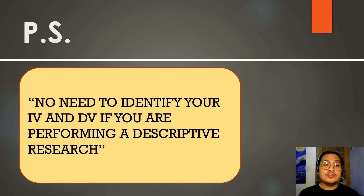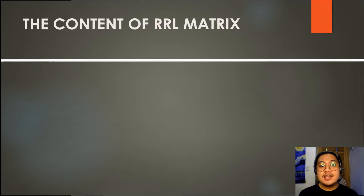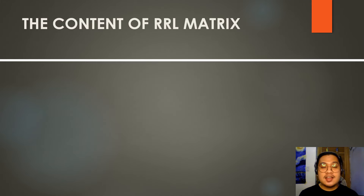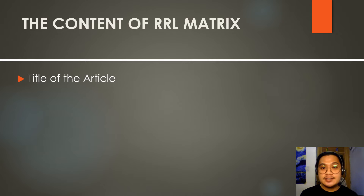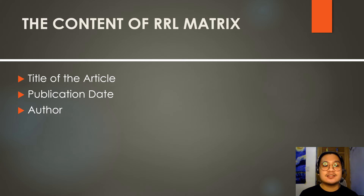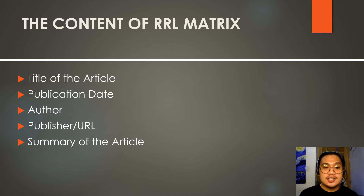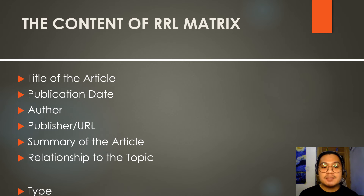Remember: you don't need to identify your IV and DV if you are performing a descriptive research. Now we can move on to creating the RRL matrix. The content of the RRL matrix includes: the title of the article, the publication date, the author, the publisher or URL, the summary of the article, the relationship to the topic, and the type of that particular RRL.